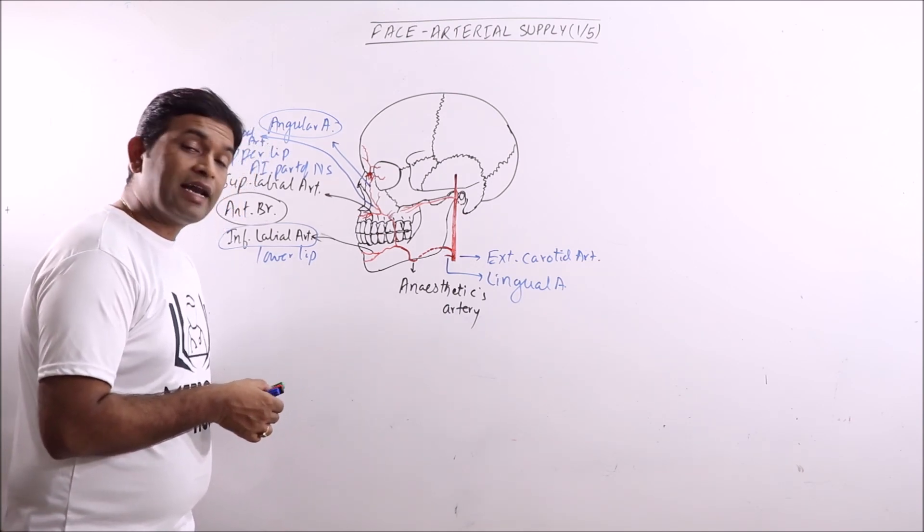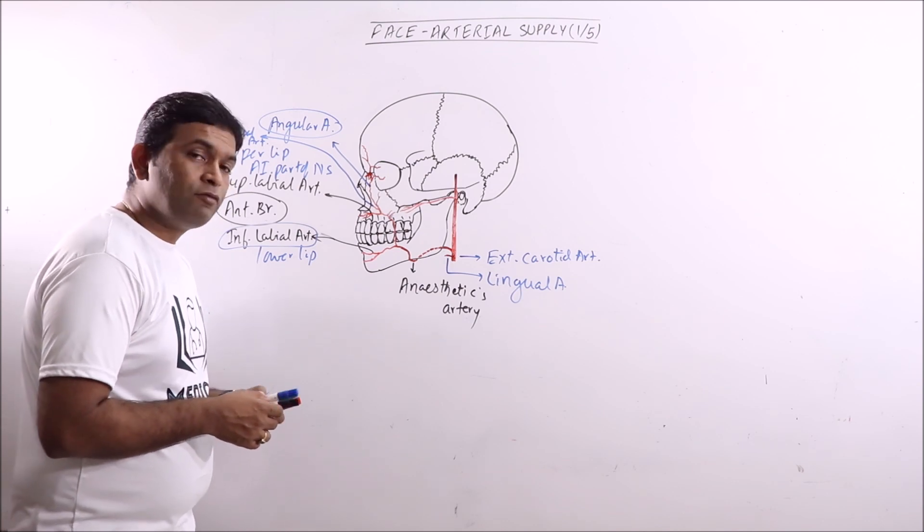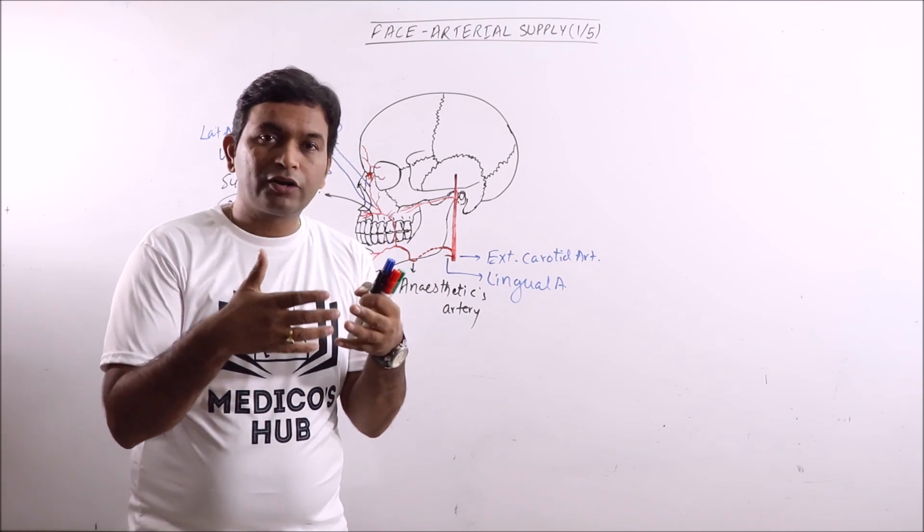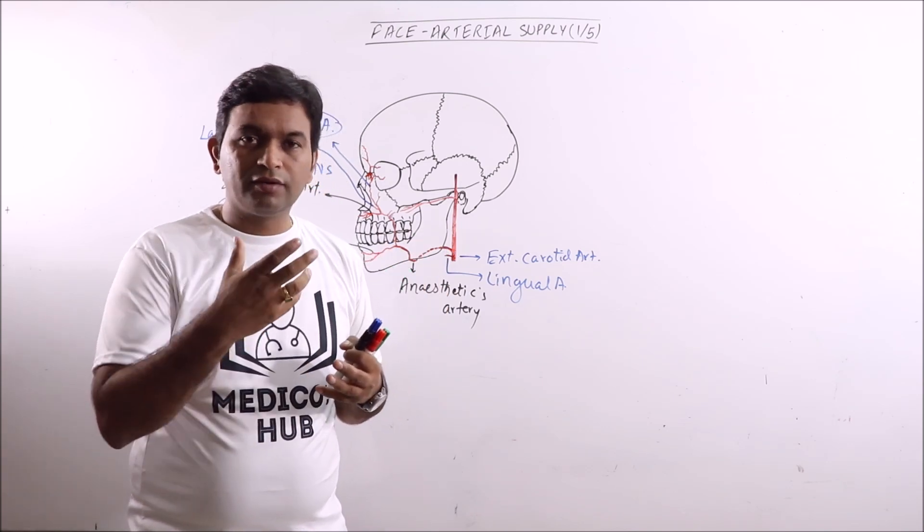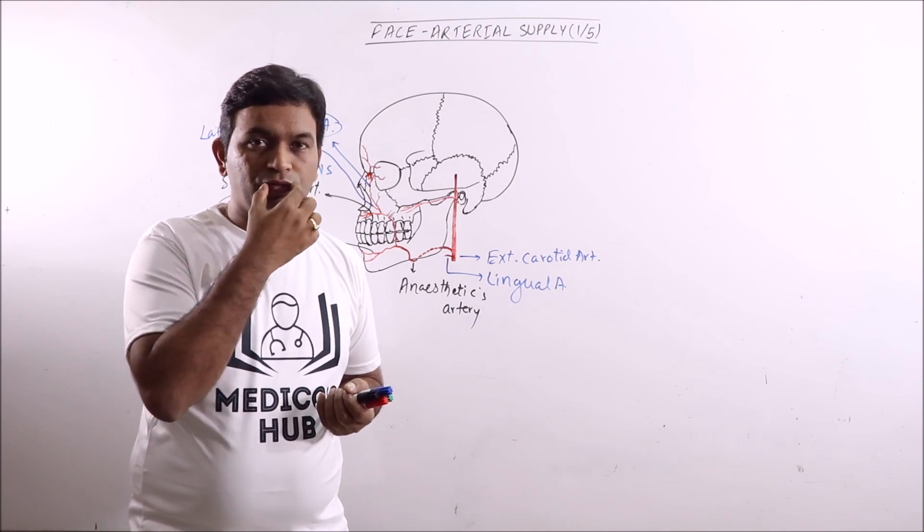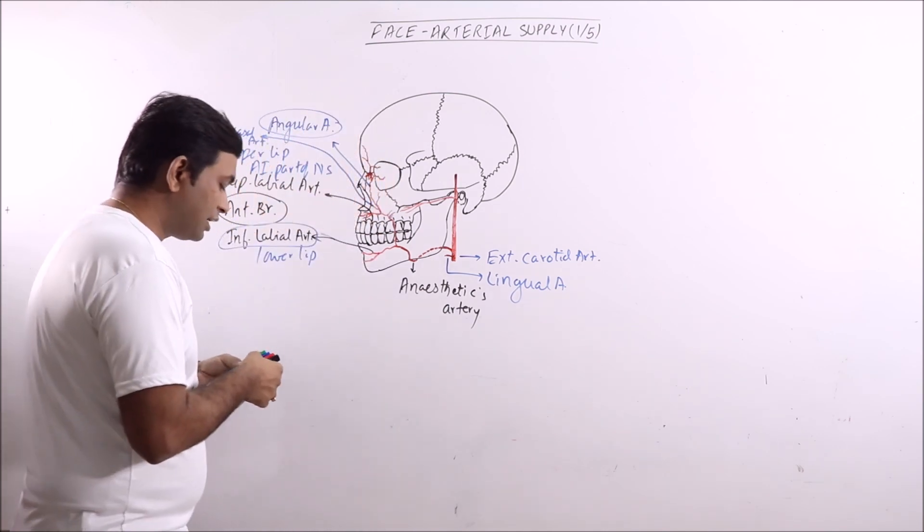Now the anastomosis of facial artery. The branches of facial artery basically anastomose with the same artery of opposite side. So there is a very wide anastomosis and a very heavy anastomosis is formed, especially in the lips.